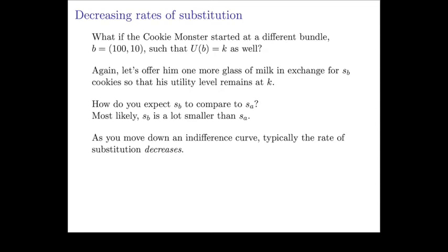So as you move down the indifference curve — if we drew a picture — there are two bundles: bundle B with 100 milk and 10 cookies, and bundle A with 10 milk and 100 cookies. At bundle A, he's willing to give up more cookies for an extra glass of milk. But at bundle B, he's willing to give up fewer cookies for an extra glass of milk. As you move in this direction, we typically expect the rate of substitution to decrease.